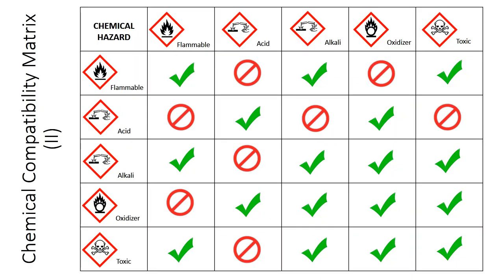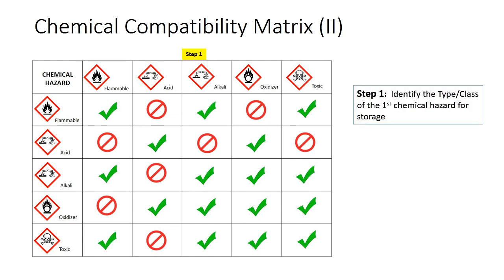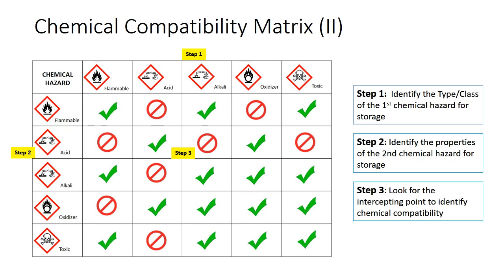Here is an example of a chemical compatibility matrix. To read it: Step 1, identify the type or class of the chemical hazard from the required column. Step 2, identify the type or class from the required row. Step 3, look for the intercepting point between the row and column to identify compatibility. For example, alkali and acids are not compatible to be stored together.